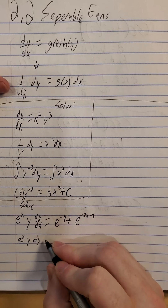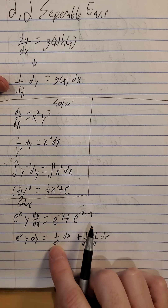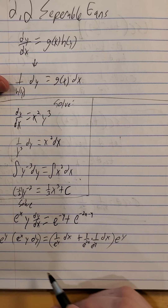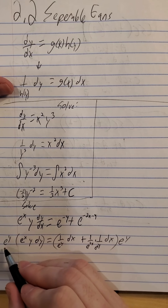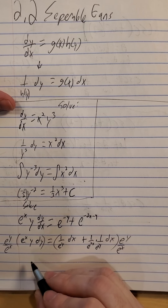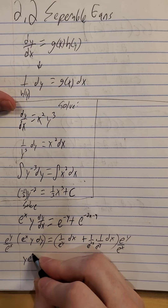Let me start with a little bit of work on the right-hand side. We multiply both sides by dx. At the moment we have e^x · y dy equals 1 over e^y times dx plus 1 over e^(2x) times 1 over e^y also times dx. I get rid of the negative exponents, and it looks like if I multiply both sides by e^y, we'll get the y's off the right-hand side.